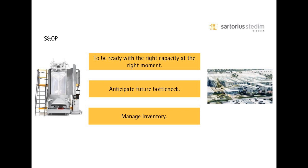For defining the demand, a dedicated team is in contact with our main customers for collecting every month a 12-month rolling forecast. A statistical approach is used where rolling forecast is not available. Once the demand has been defined, our network planning team translates it into a supply plan for our manufacturing plants that optimizes our capacity utilization and finished goods inventory.